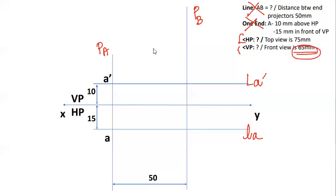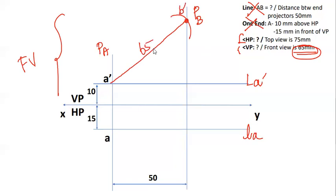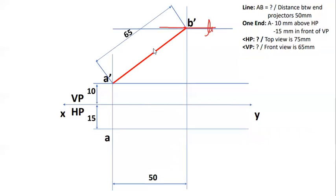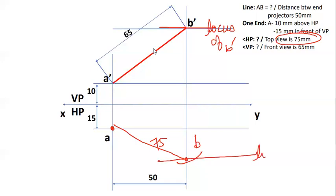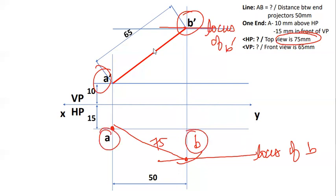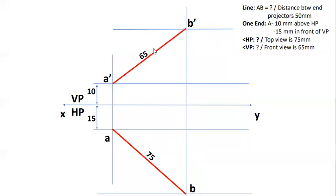The front view is 65mm. I will put the line on the left — this is the line of B', the Locus of B'. The top view is 75mm, so the point B is at 75mm. The line B gives us the front view A'B' as 65mm and the top view AB as 75mm. So we mark 2 projectors in front view and top view.